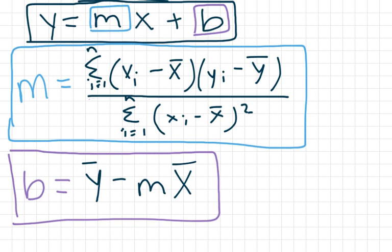I know there's a lot on this page. First of all, what we're looking for is a linear line of best fit. If it's a linear line, it's going to have the form y equals mx plus b. We're going to keep the y and the x. There are two parts of this equation that we need to solve for: m and b.